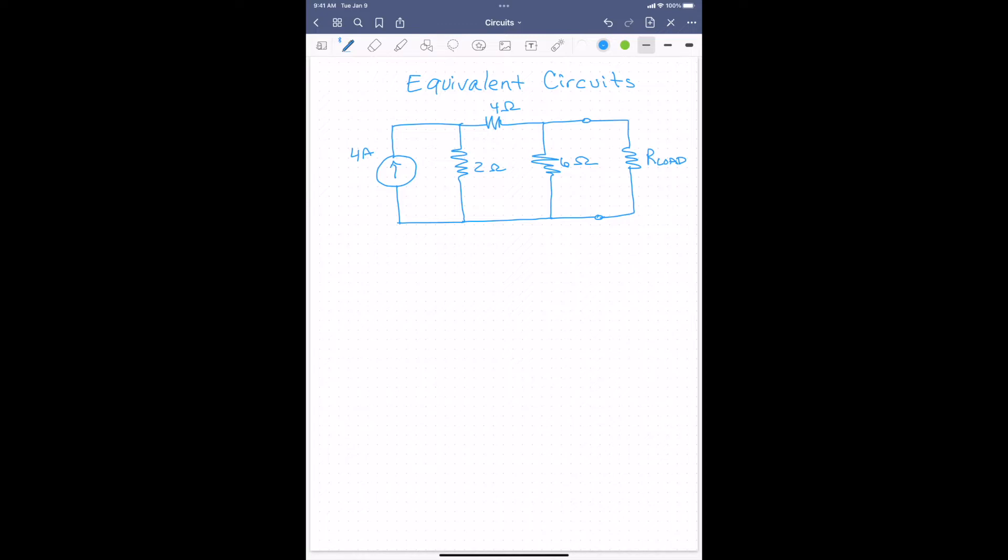Here's a circuit with an independent current source and some resistors. Please notice that one of the resistors is labeled R-load and it doesn't have a value given, and that will become evident in the future. So the question I'm going to ask is what is the Thevenin's equivalent circuit seen by the resistance R-load.